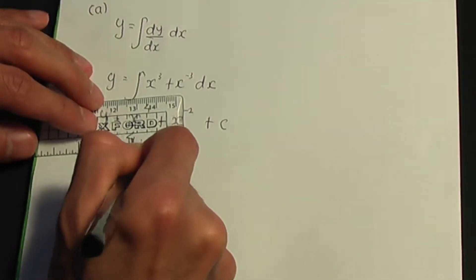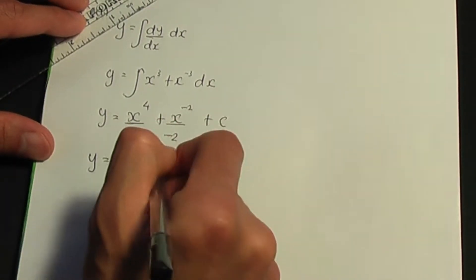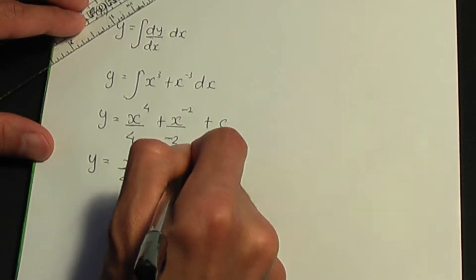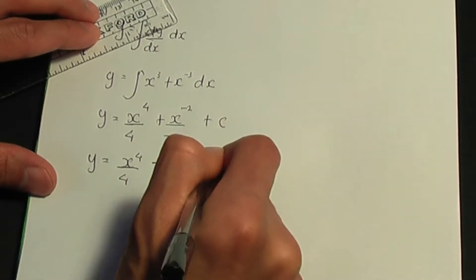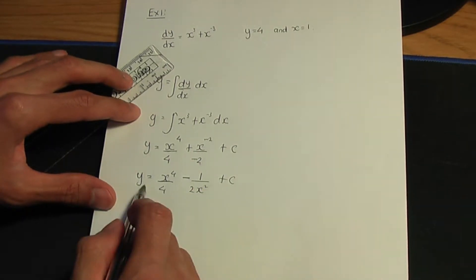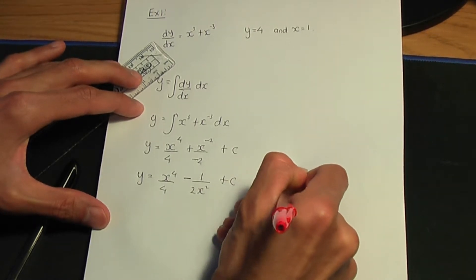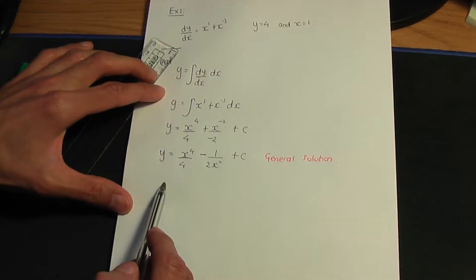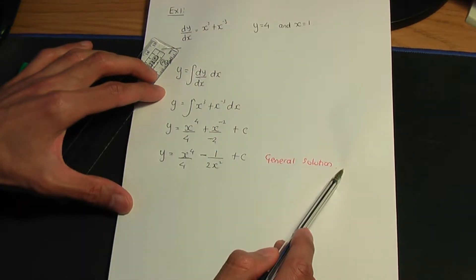Tidying this up: y is equal to x to the power of 4 divided by 4, plus a minus gives a minus, and x to the minus 2, which I can write as 1 over 2x squared, plus the C at the end. We call a solution like this — the solution containing the constant — the general solution.